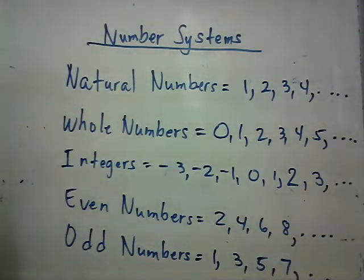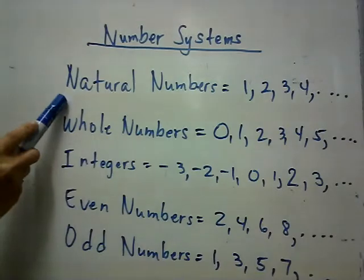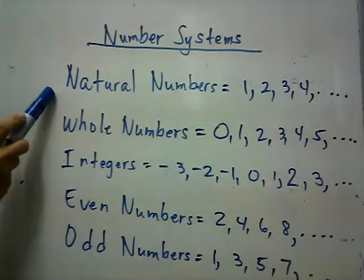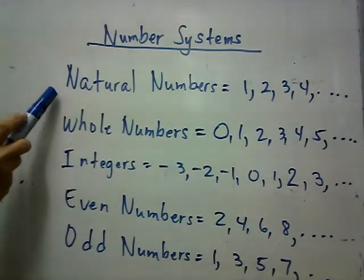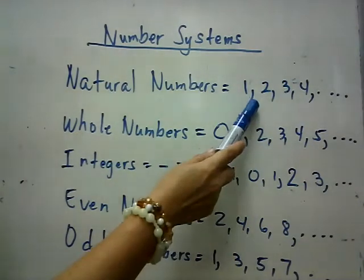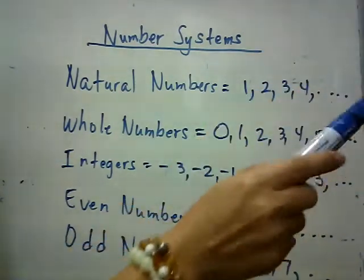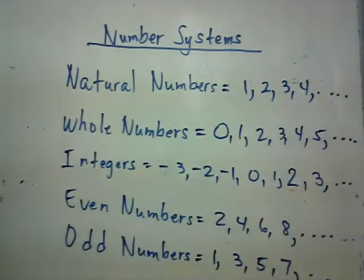We have this term in mathematics which we call natural numbers. So what are natural numbers? Natural numbers start with 1, 2, 3, 4, 5, 6, 7 and so on, infinite.